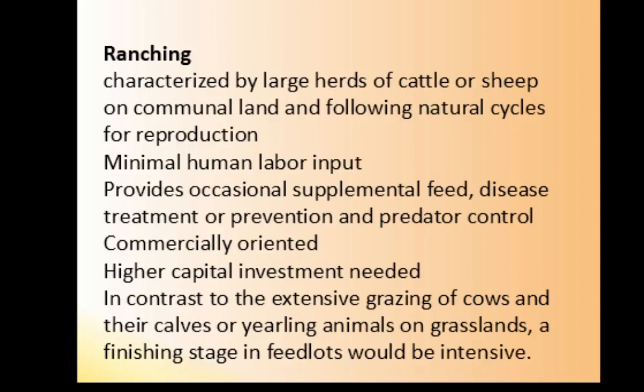Ranching, under extensive systems, is characterized by large herds of cattle or sheep on communal land following natural cycles for reproduction, with minimal human labor input. Occasional supplemental feed, disease treatment or prevention, and predator control are provided. It is more commercially oriented and requires a higher capital investment compared to the other extensive systems. It involves raising cows and their calves or yearling animals on grasslands, while a finishing stage in feedlots would be considered intensive.